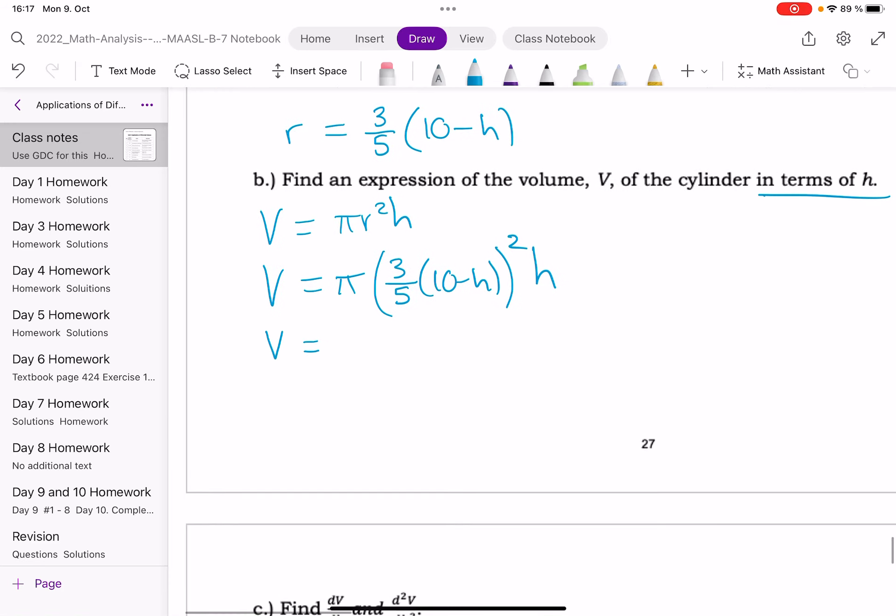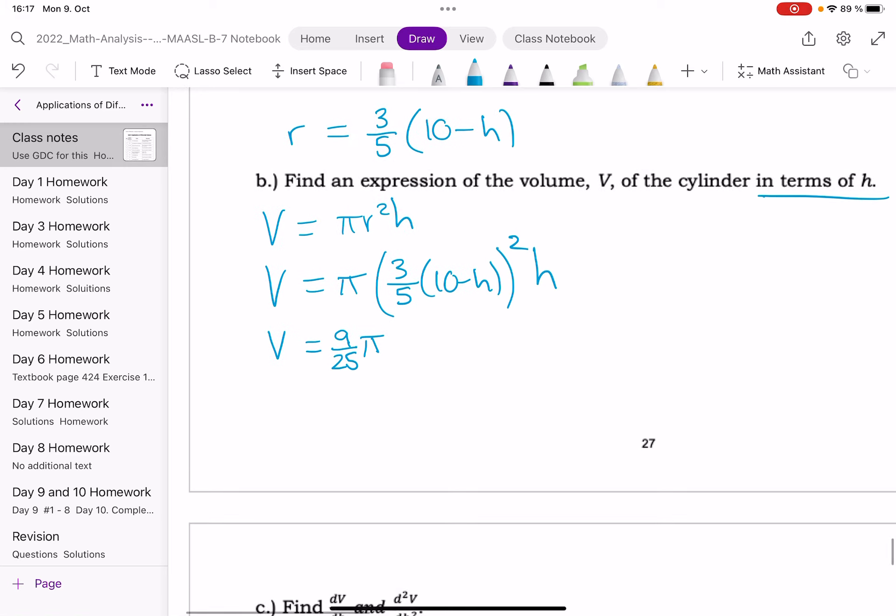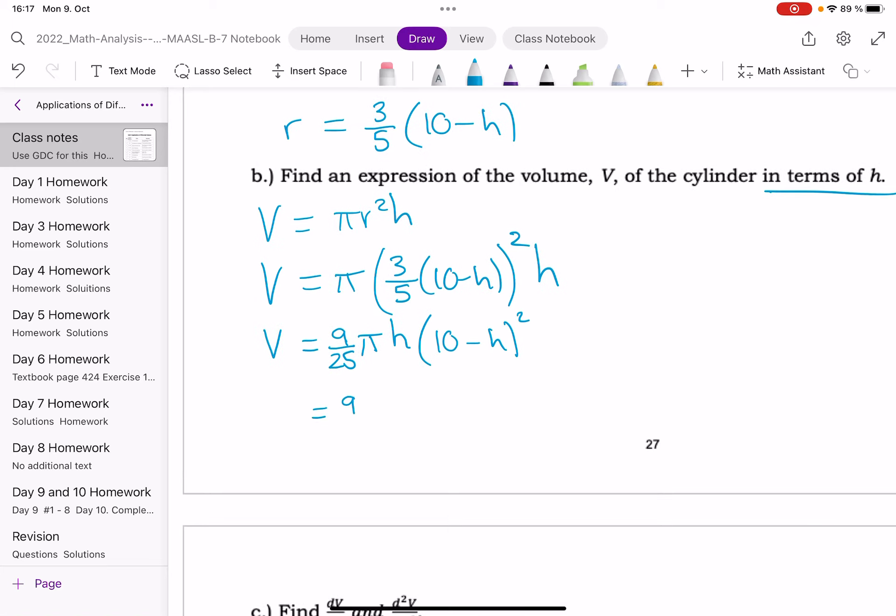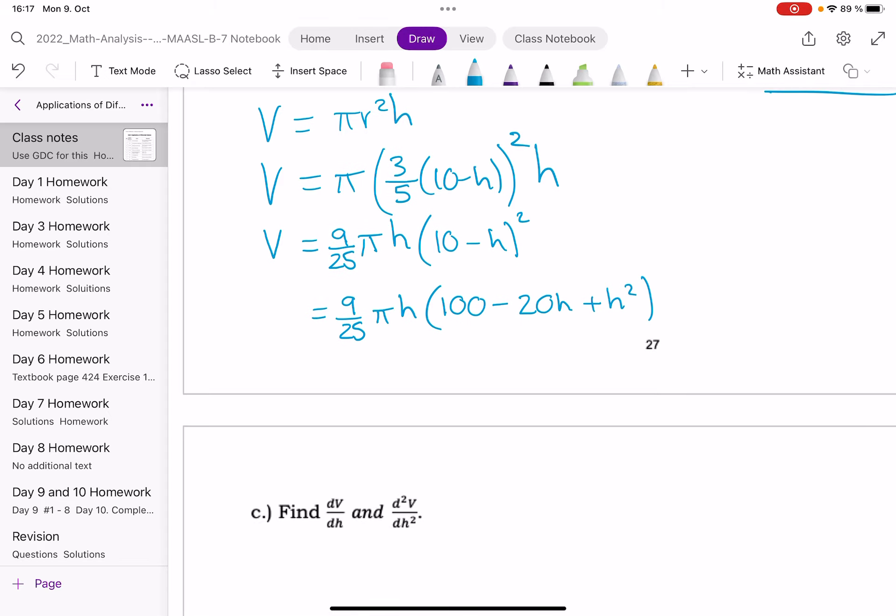So I think I will drag the 3, it will be 3 fifths squared, won't it? So that's going to come out as 9 over 25. I'm going to move the pi to the front, the pi was at the front. I think I'll move the H out the front from the end of it. And then I've got 10 minus H squared. So I took that 3 fifths to the front, but it was 3 fifths squared. So I made it 9 out of 25. And I think I'm going to expand the bracket. Just because I know I'm going to be differentiating, it's much easier to deal with expanding a bracket than having to use the product rule. 100 minus 20H plus H squared. And then I'm going to take the H into the bracket. So I've got 100H minus 20H squared plus H cubed.